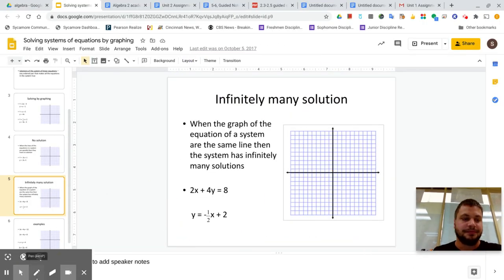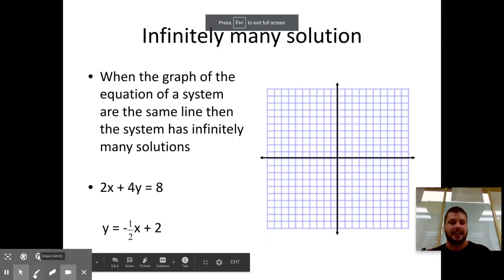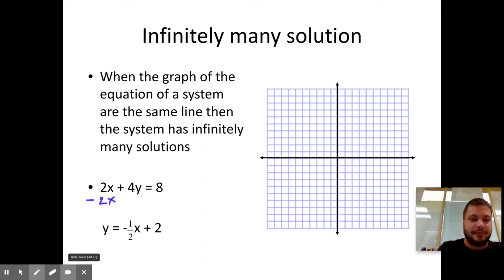Lastly, what about infinitely many solutions? If the answer is where the two lines cross, well, let's just get to the point here. I can't graph anything until the y's by itself. So first I'm going to minus 2x.